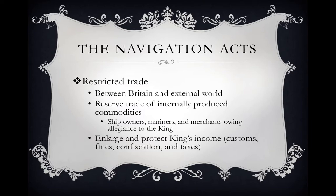The Navigation Acts restricted trade between Great Britain and the rest of the world. The colonies had a specific set of rules they had to follow — restrictions between Great Britain and the colonies, and restrictions between the colonies and the external world. Basically, the Navigation Acts were trying to give Great Britain a monopoly on trade with the colonies to the largest extent possible. Any trade flowing from or to the colonies — Great Britain was supposed to be the intermediary point.